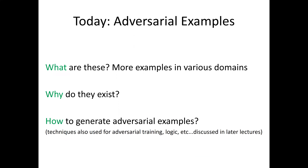The plan for today on adversarial examples is: first, we're going to show a few more examples in various application domains beyond those shown in the introductory lecture. Then we'll discuss why adversarial examples exist, and focus on techniques for generating them — both targeted and untargeted attacks. Note that these techniques will also be useful later for adversarial training, incorporating background priors, and provable training. From now on the course gets more and more technical.